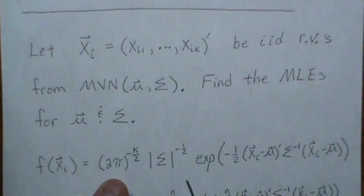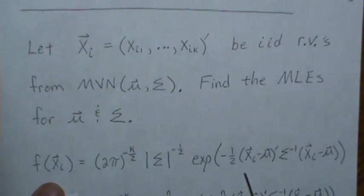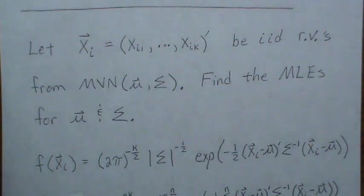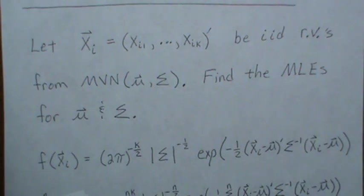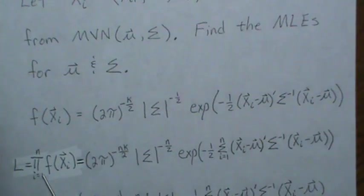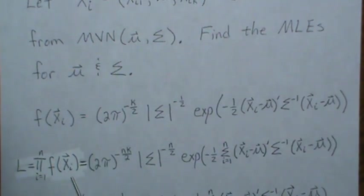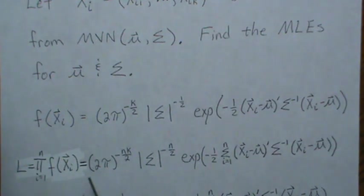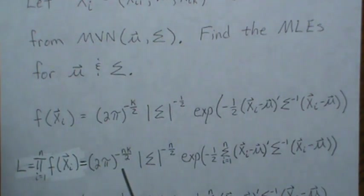It's multivariate normal, so it can be written like this. I have a video on this if you want to search it. Now we need to find the likelihood function for a sample of size n, and since they're IID, I just call it L. You can take the product of these densities from 1 to n, and then this becomes this.